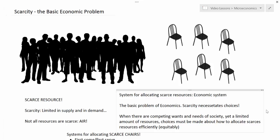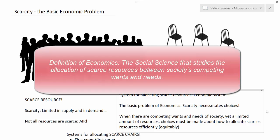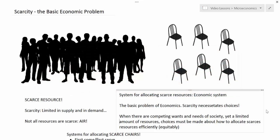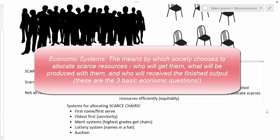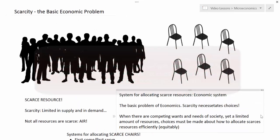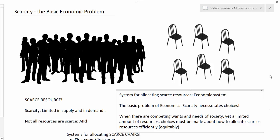Scarcity is the basic problem on which the study of economics is based. Economics studies the allocation of society's scarce resources between its competing wants and needs. Economic systems — some of which we brainstormed in class and some we didn't even begin to touch on — provide society with the tools to determine who gets what resources and how they are allocated between society's different wants and needs. In the rest of our study of economics, we're going to be building on this problem of scarcity, looking at the different systems developed and implemented over time.